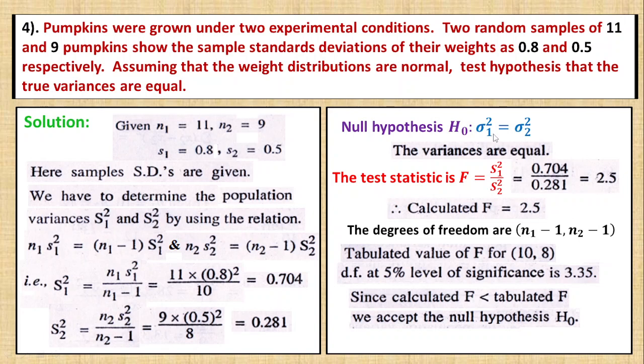Therefore, we accept H₀: the two population variances are equal, that is, the true variances are equal.